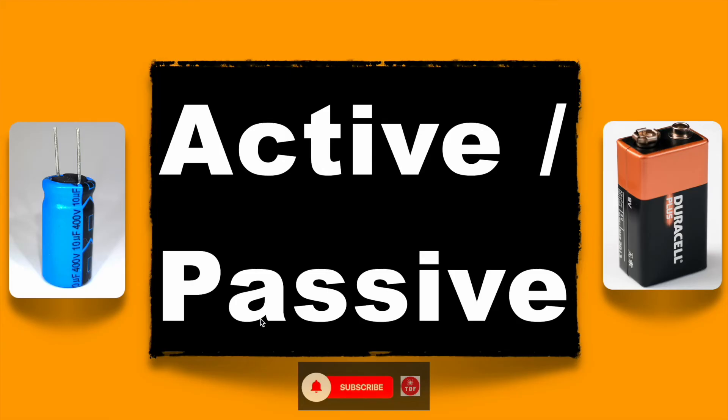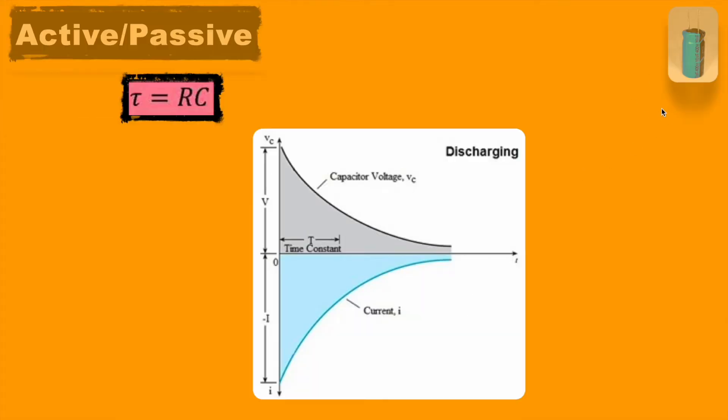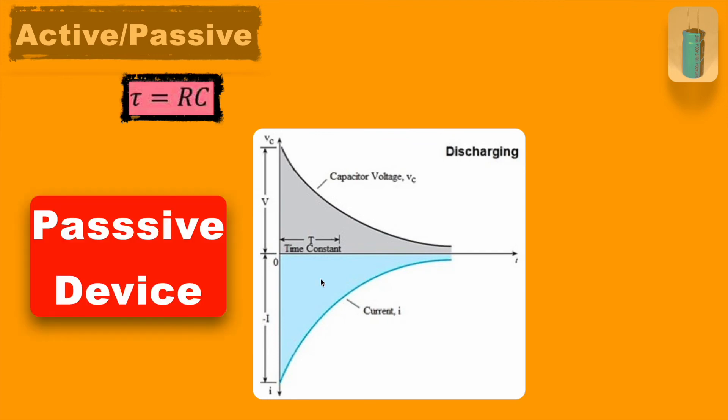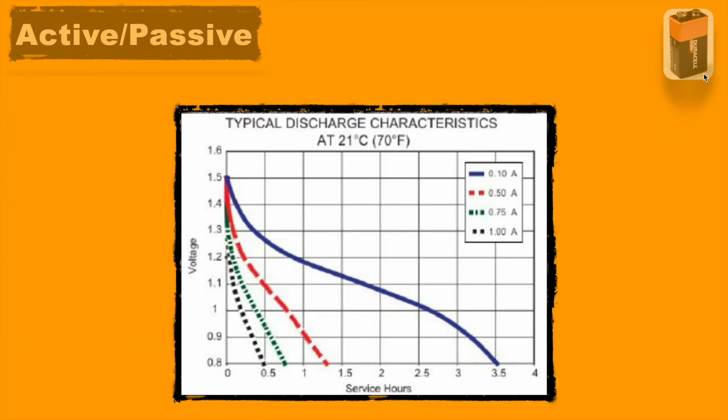The next difference: as the capacitor discharges very fast and stores very less energy in it, it is treated as a passive device which doesn't provide electrical energy to the circuit. On another side, this battery stores huge energy inside it and gets discharged in hours. It is an active device.